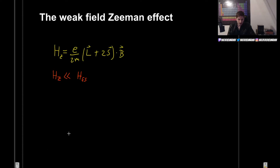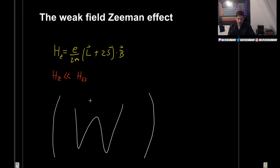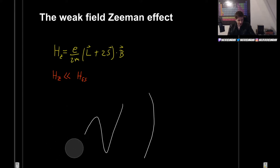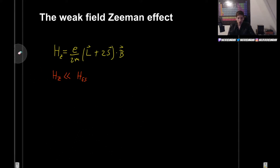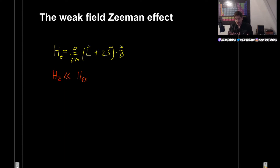Degenerate perturbation theory meant that we needed to find this W matrix. But if we can use some clever tricks, we can avoid that. We want to find some states that commute with the Hamiltonian, and that will let us avoid computing the full matrix.